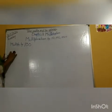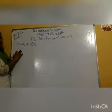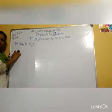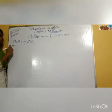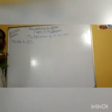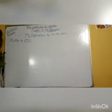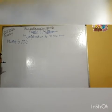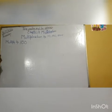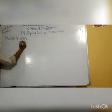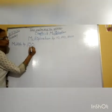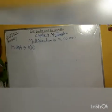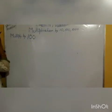Next is multiplication by 100. In this case also, whenever we multiply any digit by 100, what we have to do? We have to add two zeros to the extreme right of the number.